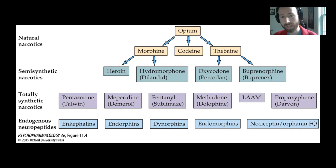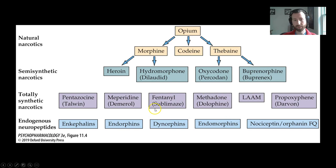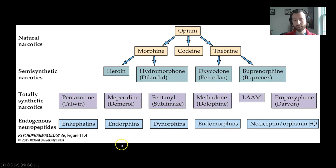Here's a figure from the book detailing the different sorts of opiates. We have natural narcotics derived directly from opium, such as morphine and codeine. Semi-synthetic narcotics are modified versions of those natural narcotics with various alterations — things like heroin and oxycodone. There are also totally synthetic narcotics, not derived but completely synthetic; things like methadone and fentanyl are important members of this class that we'll return to later. Finally, there are endogenous neuropeptides — because our brains have opiate receptors, our bodies produce their own opiate neurotransmitters, or neuropeptides, and we'll talk about those as well.